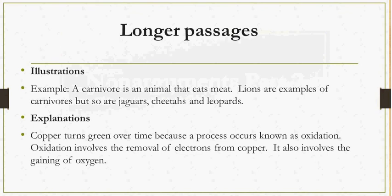Here's an example. Copper turns green over time because a process occurs known as oxidation. Oxidation involves the removal of electrons from copper. It also involves the gaining of oxygen. So here we see that the person is trying to explain to us why copper turns green over time. Explanations will typically contain the word 'because,' but the word 'because' here is not a premise indicator — it is going to show us why the phenomenon occurs.